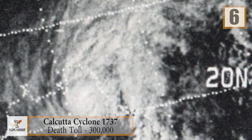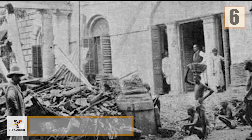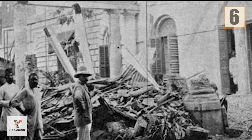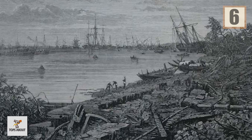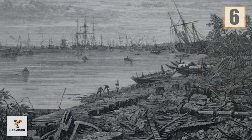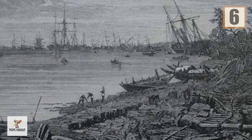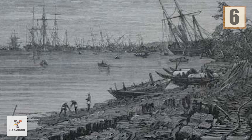Number 6: 1737 Calcutta Cyclone. On October 7th, 1737, a natural disaster struck the city of Calcutta, modern-day Kolkata, in India. For a long time this was believed in Europe to have been the result of an earthquake, but it is now believed to have been a tropical cyclone.